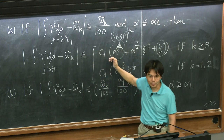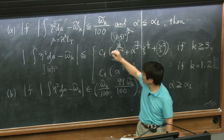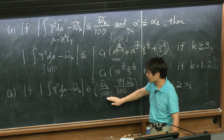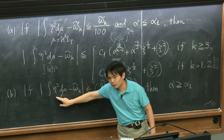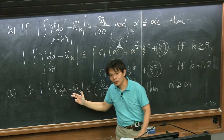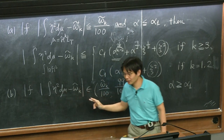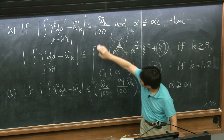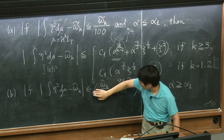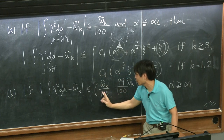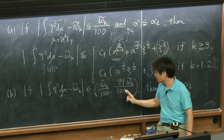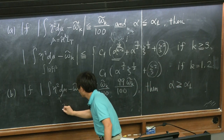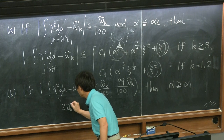So why do we have this? This has to do with the estimate that we want. Now, just write E(t) to be the integral of eta^2 d(mu_T) minus omega_K-tilde — I'm back to the time-dependent situation, where mu_T is the Brakke flow — and this proposition gives you, very roughly speaking, that d/dt of E(t) is less than or equal to minus minimum of alpha_1 and E(t)^{(k-2)/k}. I'll restrict myself to k bigger than 3; the lower-dimensional case is easier to deal with.